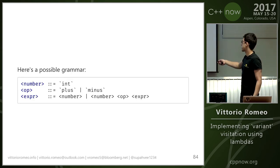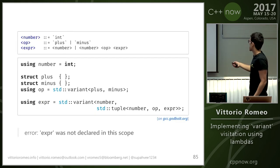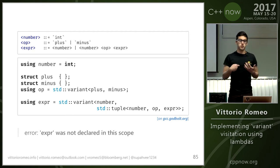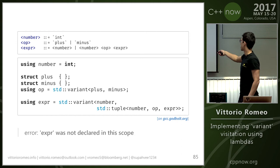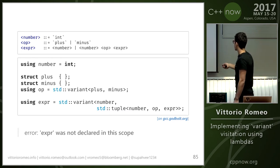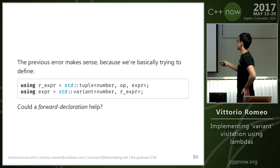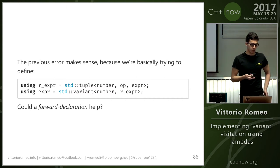A possible grammar: a number is just an int. An op (operation) is either plus or minus — empty tag structs. An expr is either a number (base case) or a number followed by an operation and an expression (recursive case). Intuitively you'd model this in C++ by saying expr is a variant of a number and a tuple of number, op, and expr. The issue is this doesn't compile — 'expr was not in current scope' — because you're defining a tuple containing expr before having a full declaration of expr.